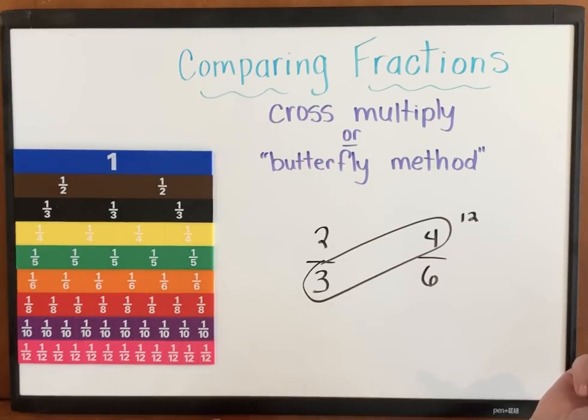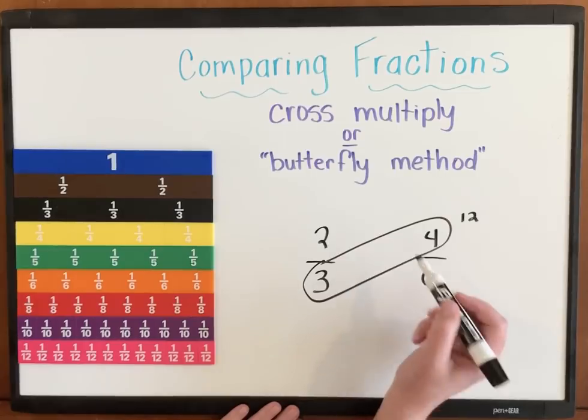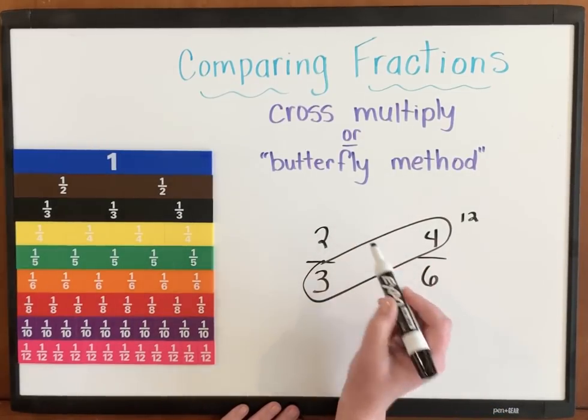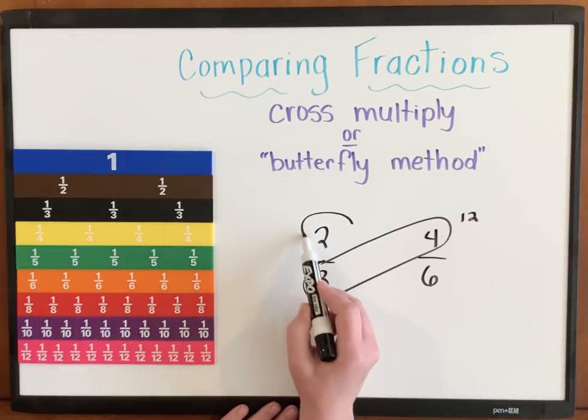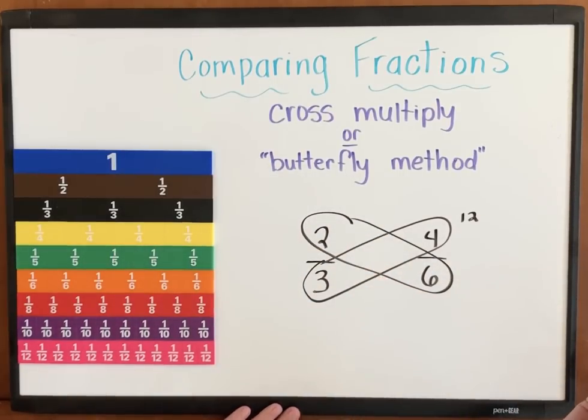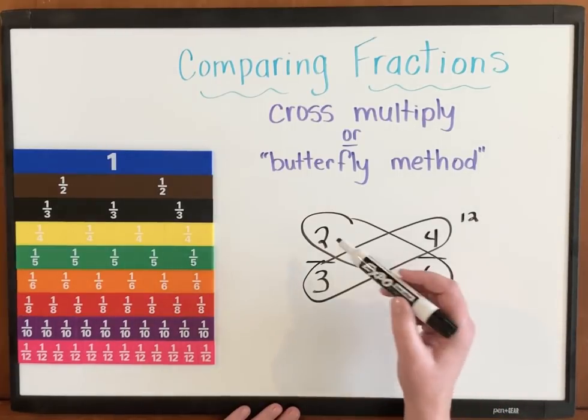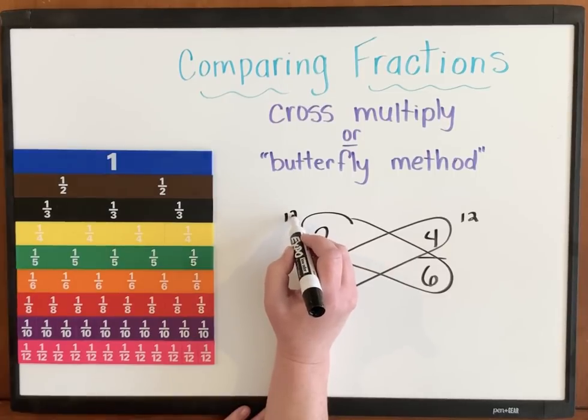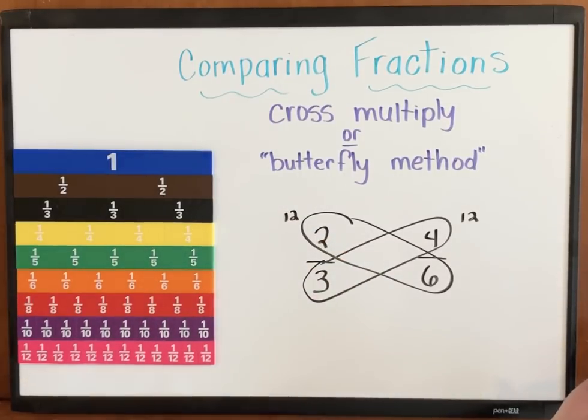Now we're not done, we've only done one step in this method. Let's continue multiplying this denominator by this numerator. To do that and to keep track of that, I can circle those numbers. What is 6 times 2? Well, 6 times 2 is 12. And I'm going to write 12 up in my top corner.